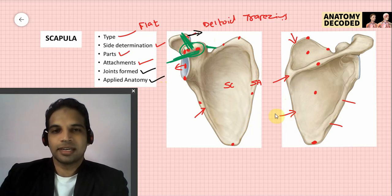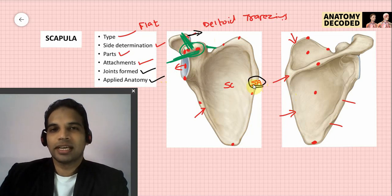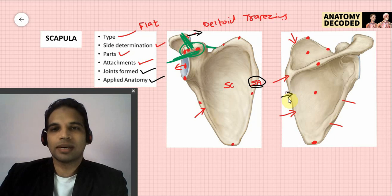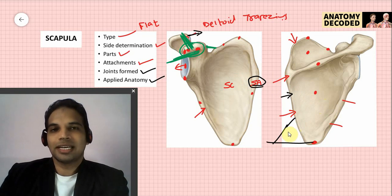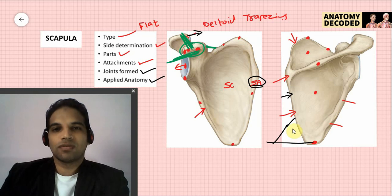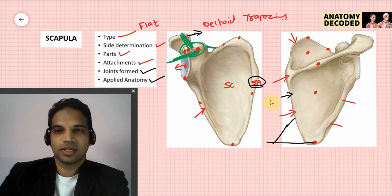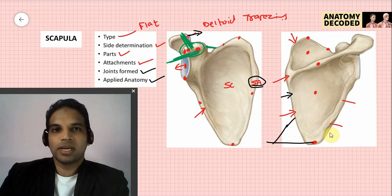In applied anatomy: winging of the scapula occurs when the nerve supplying serratus anterior is paralyzed — rhomboids minor and major pull the scapula back, making the medial border prominent. The medial border of the scapula also forms a boundary of the triangle of auscultation, where breathing sounds can be clearly heard when the stethoscope is placed in this region.